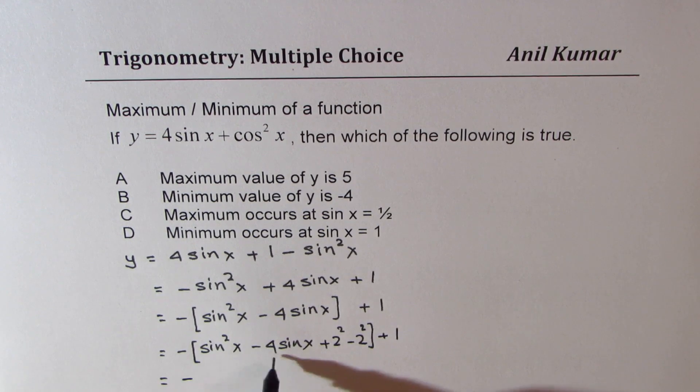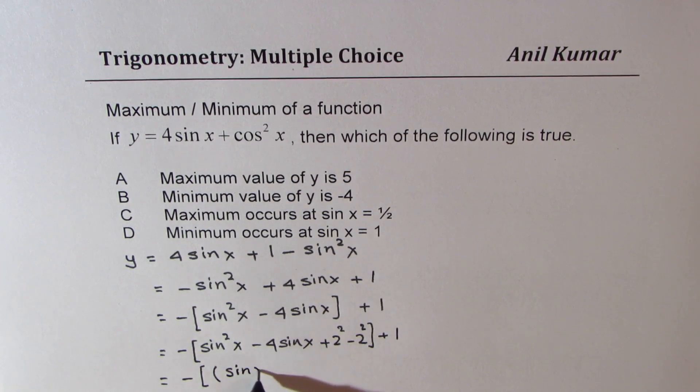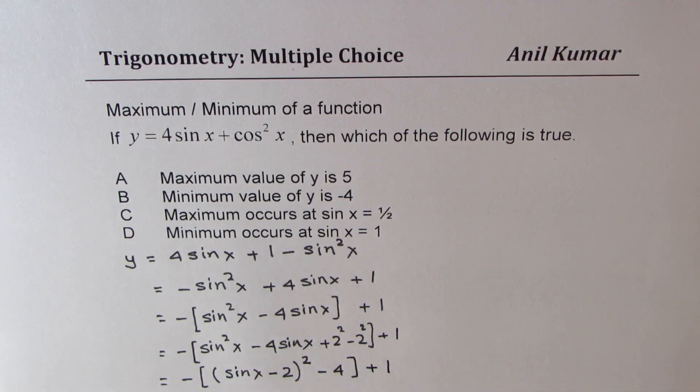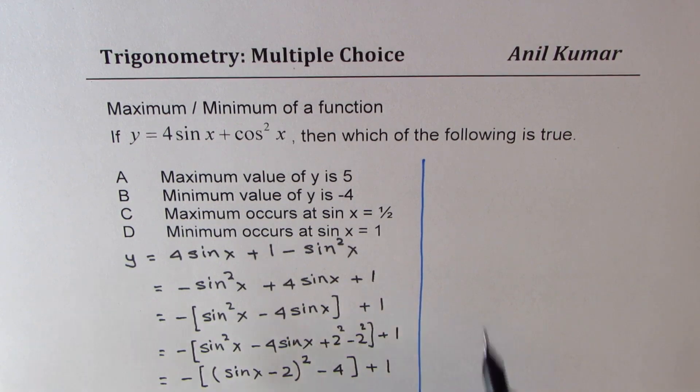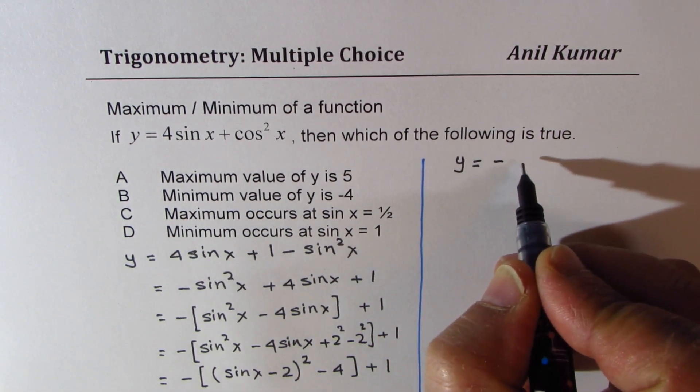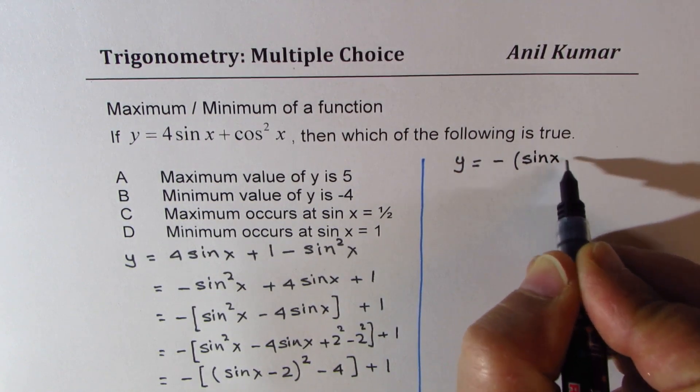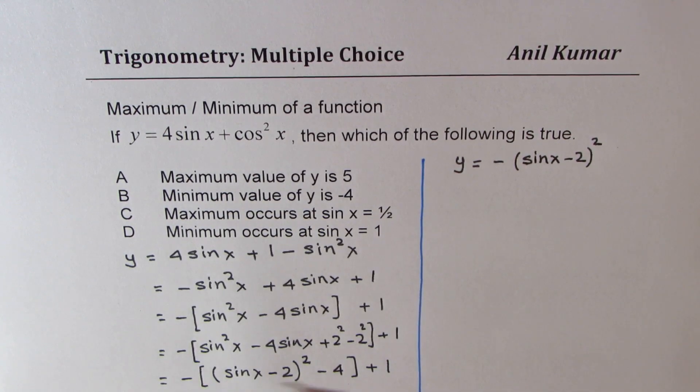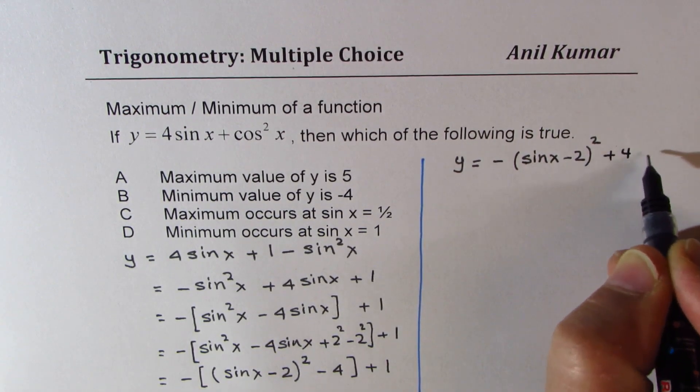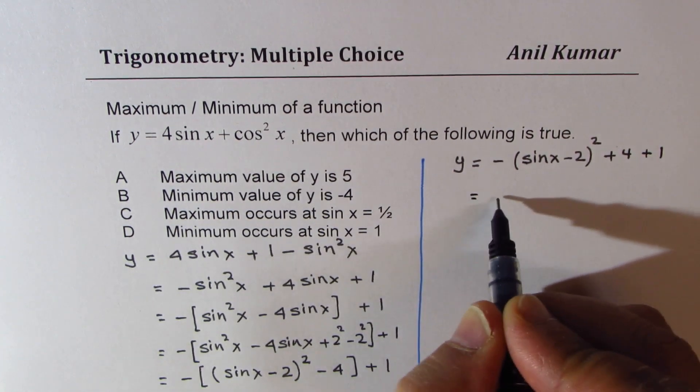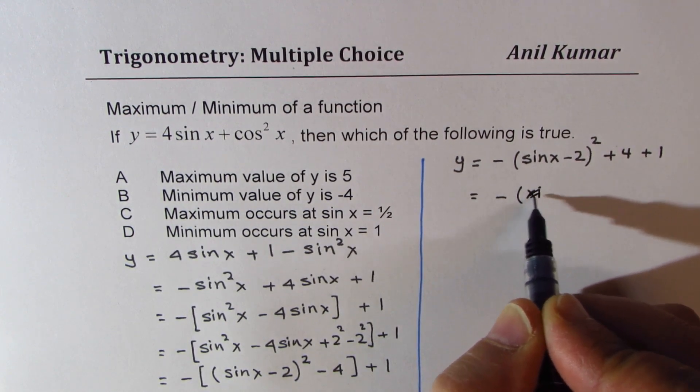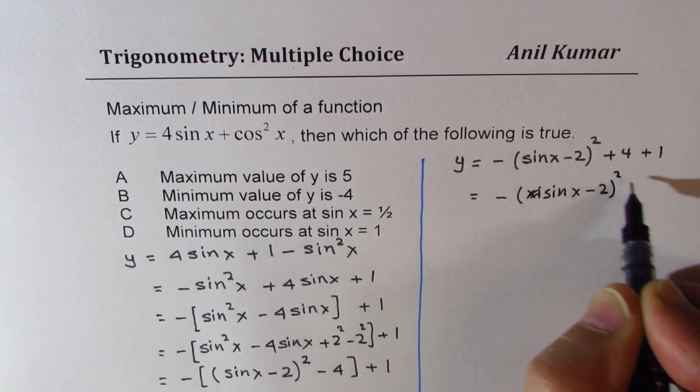Now that makes the first three terms as a perfect square, which could be written as sine x minus 2 squared. So let me take it to the right side and further simplify. We could write this as y equals minus, let's open the bracket, sine x minus 2 whole squared. And that becomes plus 4 and then we have plus 1. So that gives you minus sine x minus 2 whole squared plus 5.